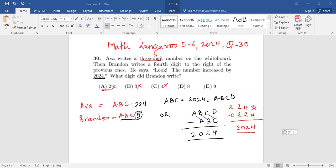And Brandon wrote what number? Brandon wrote 2248. Now if you do 2248 minus 224, we just did that, you will get 2024. So the number that Brandon wrote was number 8. That's my answer.